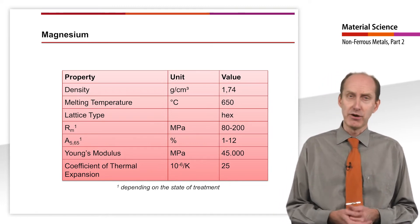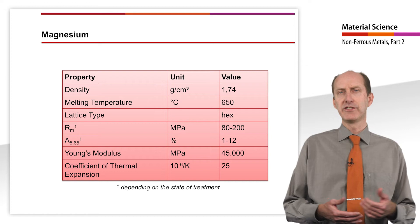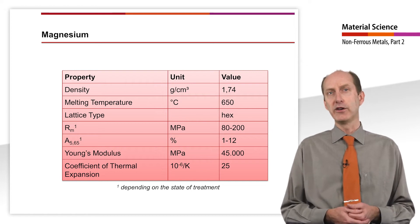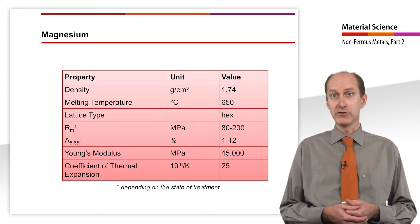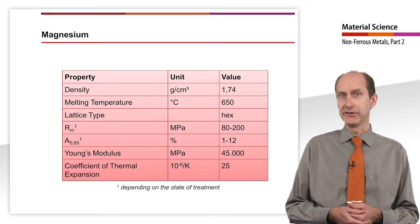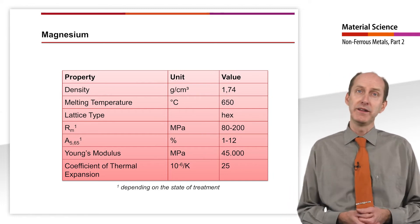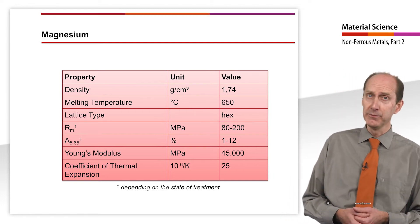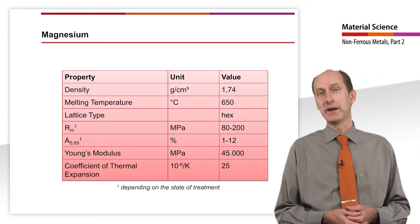The mechanical properties depend to a large extent on the alloy composition, the manufacturing process and its parameters. The main alloying elements are aluminum, zinc, silicon and manganese.